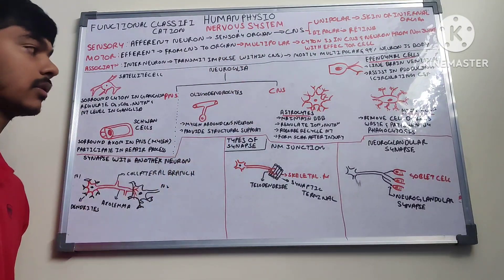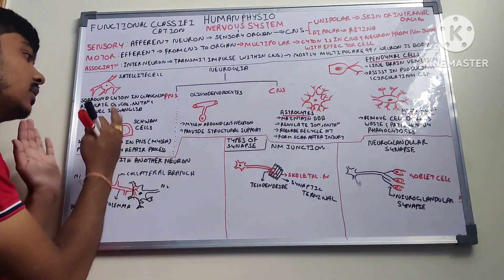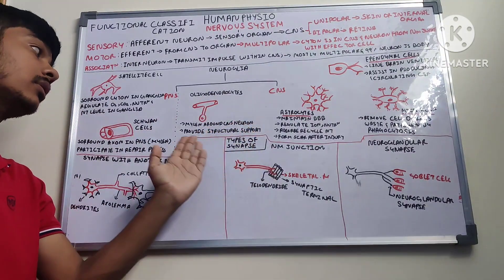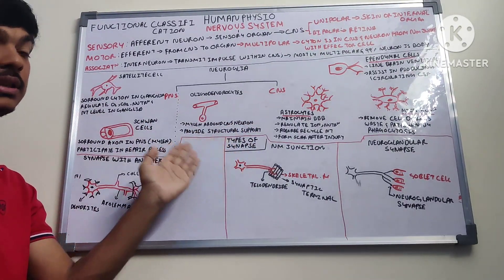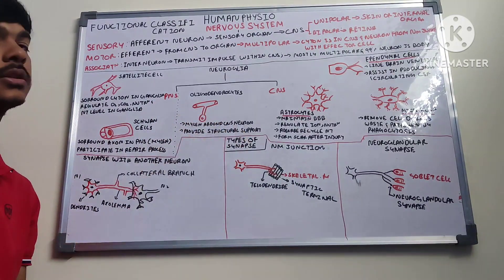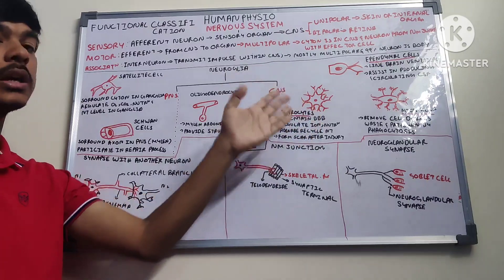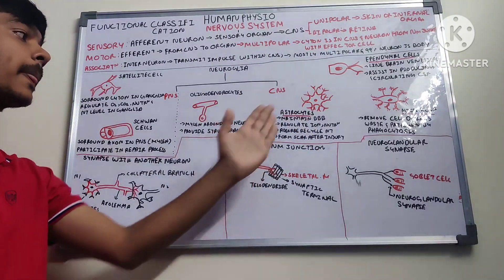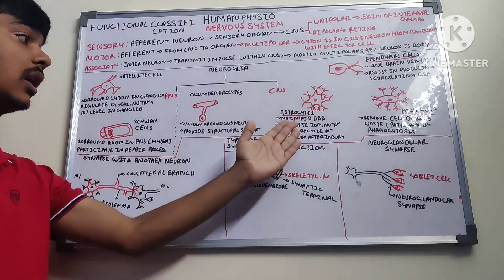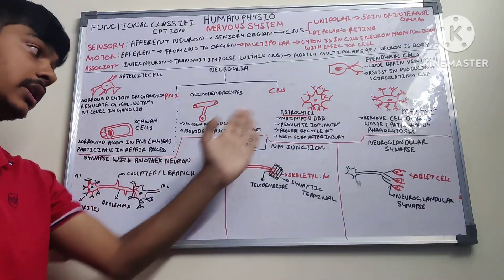In the central nervous system, the neuroglia include oligodendrocytes, ependymal cells, astrocytes, and microglia. Oligodendrocytes perform a similar function to Schwann cells but form myelin around neurons within the CNS and provide structural support. Astrocytes maintain the blood-brain barrier, regulate ions and nutrition in and around the neuron, absorb and recycle neurotransmitters, and form a scar after injury.